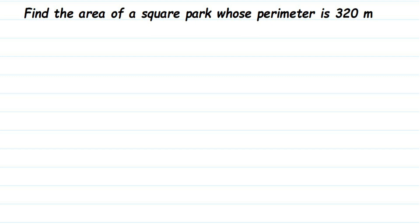Hello everyone, here's a question: Find the area of a square park whose perimeter is 320 meters. They're asking us to find out the area, but instead of giving the side, they have given us the perimeter.